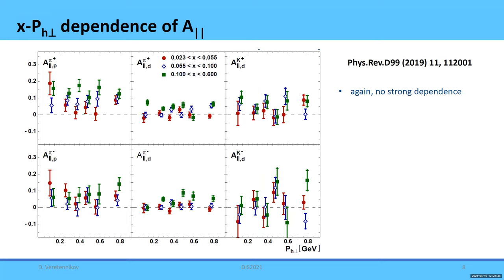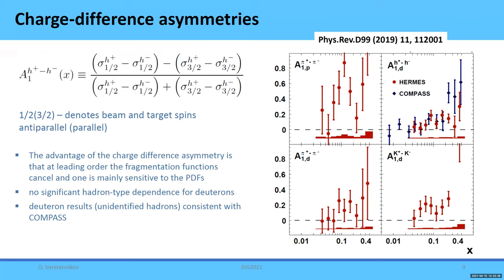The next picture is the x–P_h⊥ dependence of A_{||}. The same behavior of dependencies is visible. In principle P_h⊥ should also resolve some transverse momentum effects, but within statistics we do not see it — only that for high x we have higher asymmetries. The next point is the charge difference asymmetry, which is basically the asymmetry between positively and negatively charged hadrons. One advantage is that in leading order the fragmentation function is cancelled, making it mainly sensitive to PDFs.